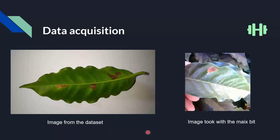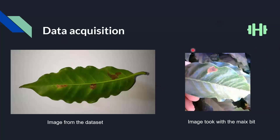Those are the images that I used. These are the images from the dataset and this is the image that I took. The images are very different, as you can see. This one has a lot of noise in the background, while this one is pretty isolated. This is probably what the model will see in real life, so it's good to have pictures like this in your dataset.